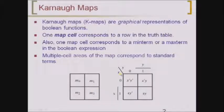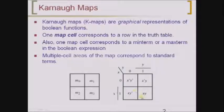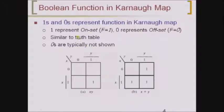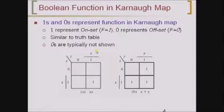The same is shown on the right-hand side with the variables X and Y. When you have two variables you get totally four combinations: 0,0 — 0,1 — 1,0 — and 1,1. These minterms are represented with variables in complemented as well as uncomplemented form. A logic 1 represents the on-set (f=1) and logic 0s represent the offset (f=0). Similar to a truth table, 0s are typically not shown on the map; we represent only the minterms.